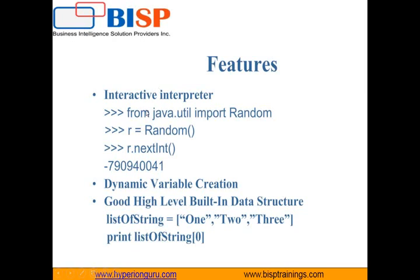Now let's talk about the features of Jython. One feature is the interactive interpreter. For example, we can write 'import Java.util.Random' and the Random library gets imported into our Python program. We can directly use that Random class — create an instance of it and use that object — without creating a whole program or adding additional libraries. We simply import it from Java and implement the functionality in our Python code.